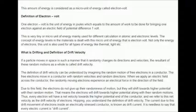When we apply an electric field across the conductor, the randomly moving electrons experience an electrical force in the direction of the field. Due to this field, the electrons do not give up the randomness of motion, but they will shift towards higher potential with their random motion.